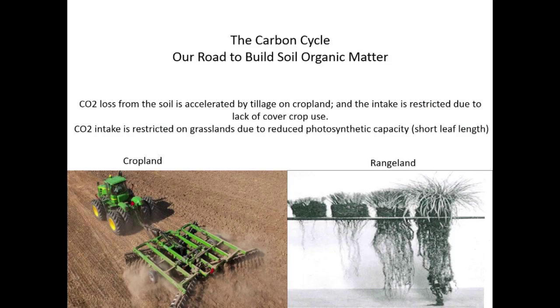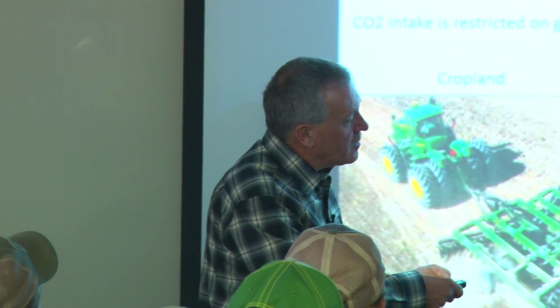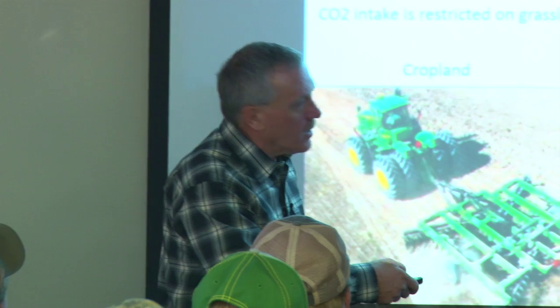In the first half of my career, I was over here on my grazing systems with short leaf length. In the second half, I got more leaf length and recovery time in my grazing systems, giving me a bigger leaf where I could harvest CO2 and sunlight. If your leaves are too short, you don't harvest much — it really restricts your intake. I needed to figure out how to get a longer leaf length, and then we can start that whole process.